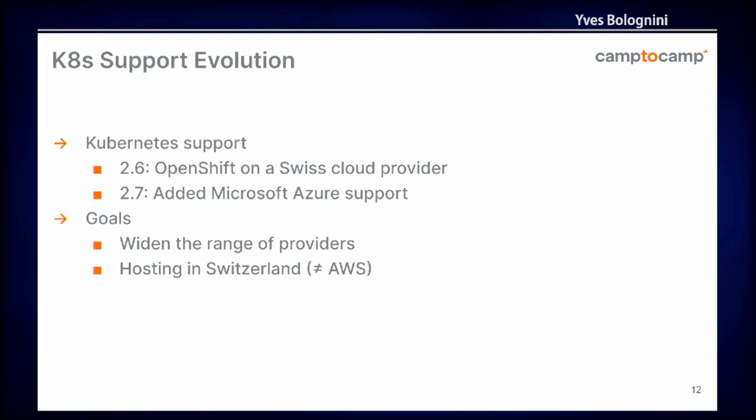Another evolution of the product is that we are supporting more Kubernetes environments. With version 2.6 it was possible to use OpenShift. The goal was to have a Swiss cloud provider because many of our customers want to be hosted in Switzerland. We needed a wider range of providers, so with version 2.7 we added support for Microsoft Azure - also because it is hosted in Switzerland. AWS is not guaranteed for that.